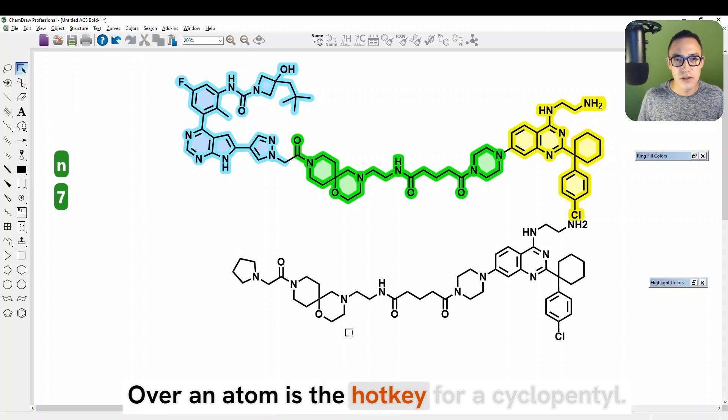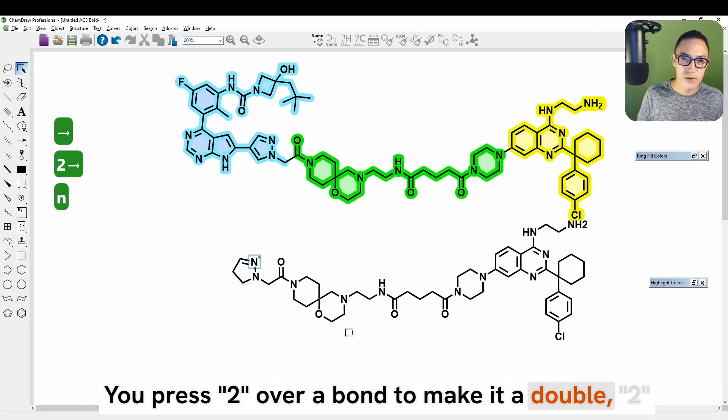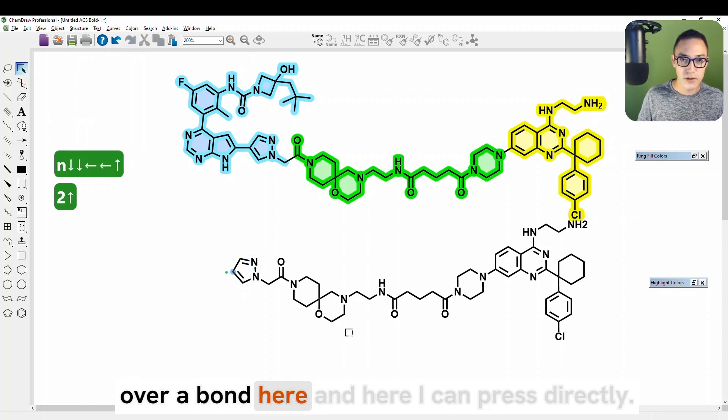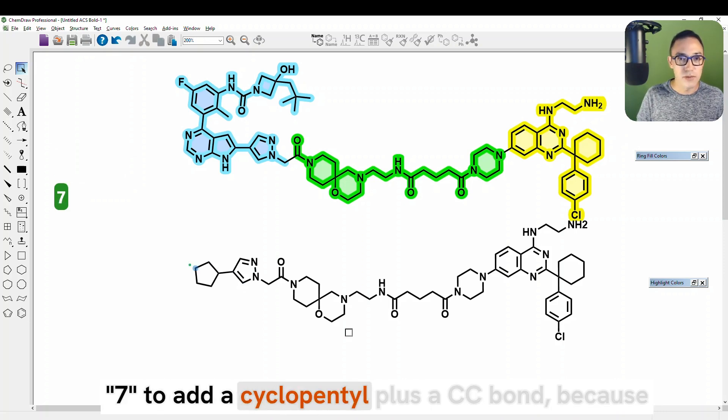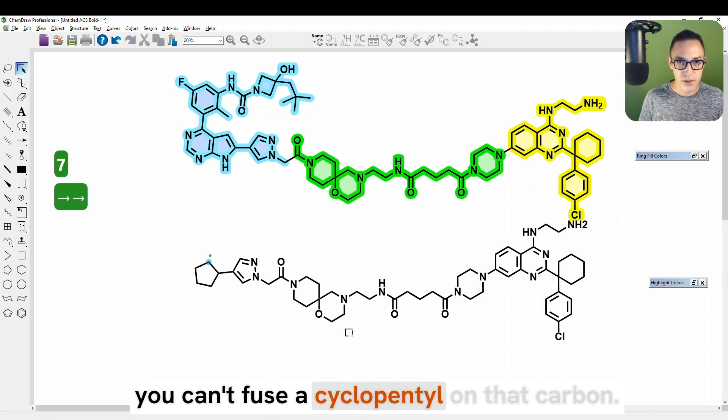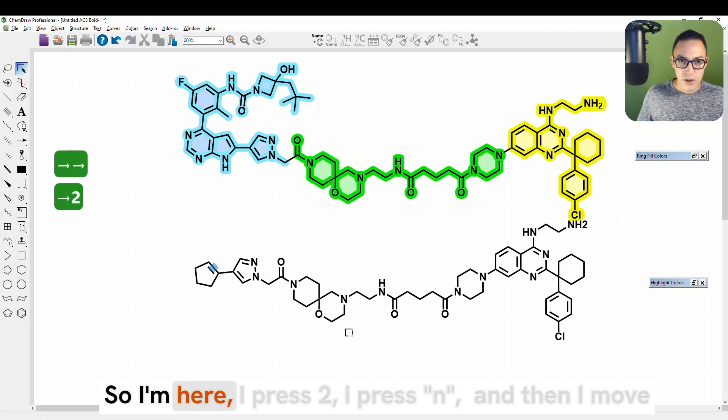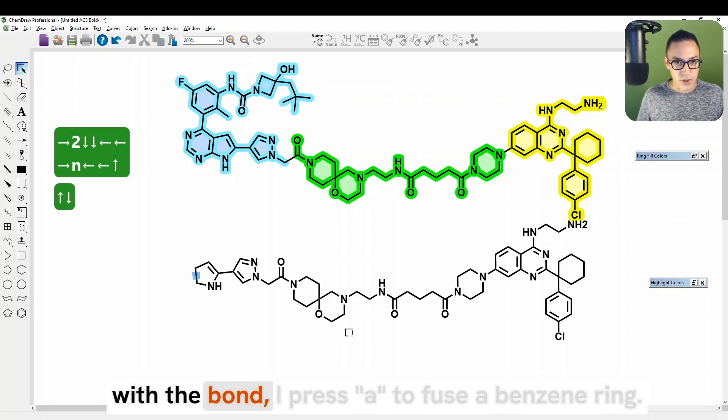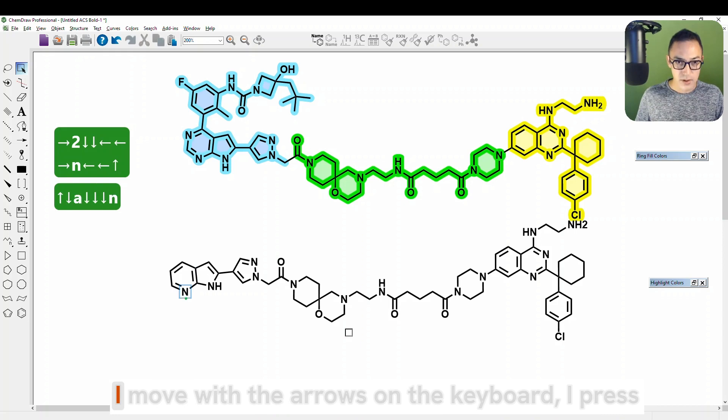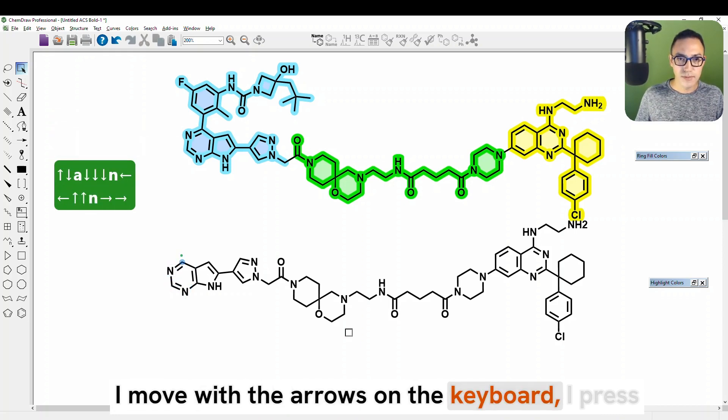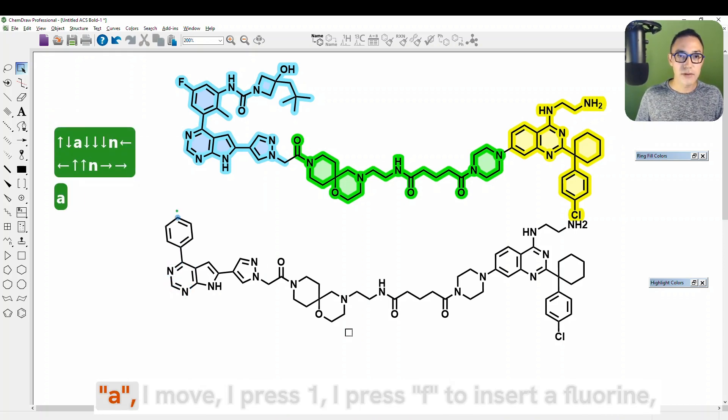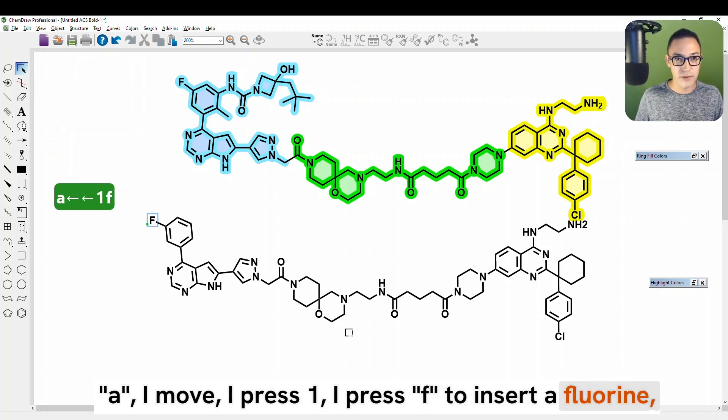You press two over a bond to make it a double, two over a bond here. And here I can press directly seven to add a cyclopentyl plus a CC bond because you can't fuse a cyclopentyl on that carbon. So I'm here, I press two, I press N, and then I move over the bond, I press A to fuse a benzene ring. I move with the arrows on the keyboard, I press A.